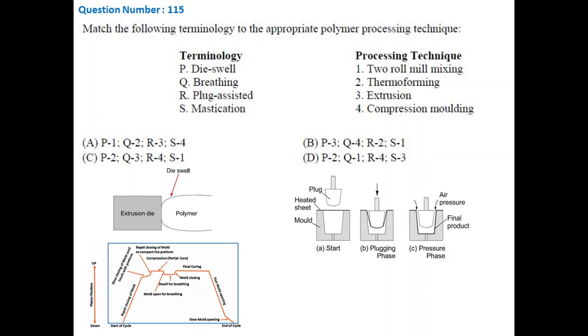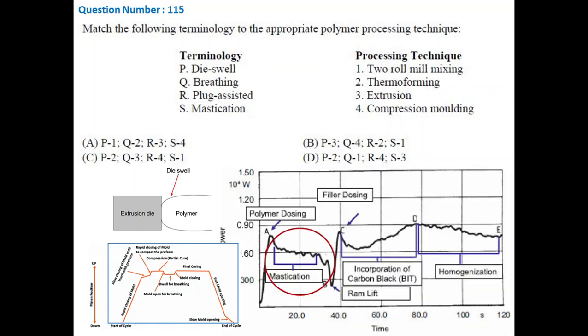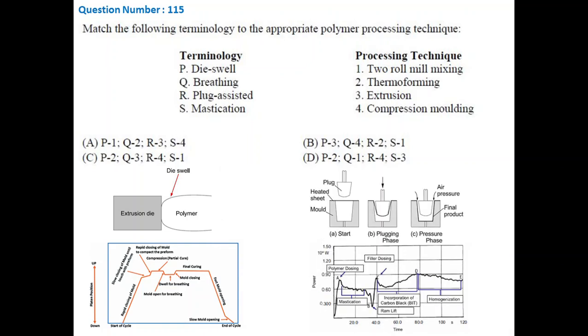Plug assisted is a form of thermoforming in which plug is used to provide pre-shaping of the material. On the other hand, mastication is the step in the two-roll mixing in which the raw polymer is sheared and broken down to create an easier flow. So based on this information, it is clear that B is the correct answer.